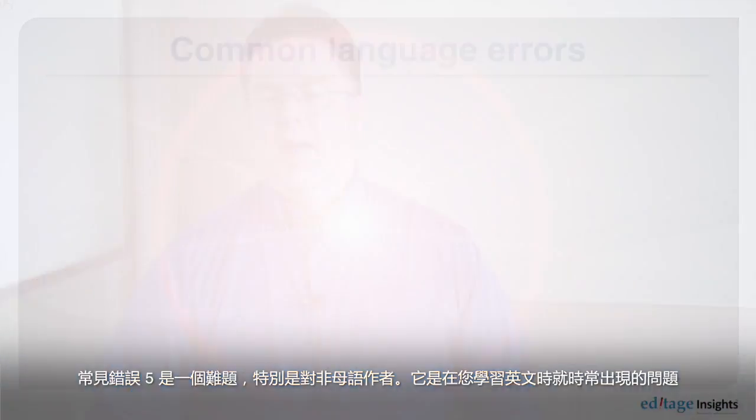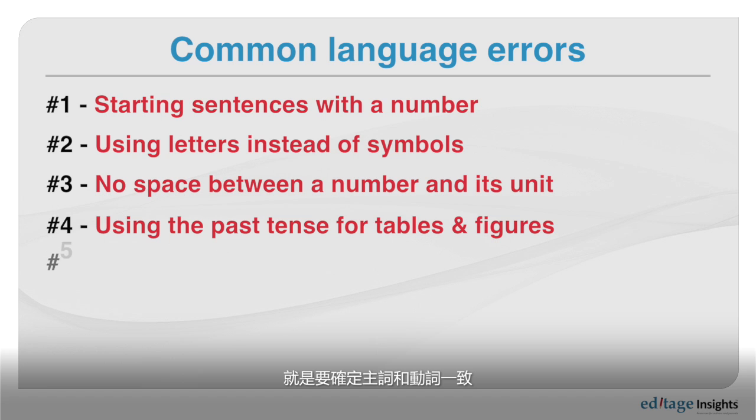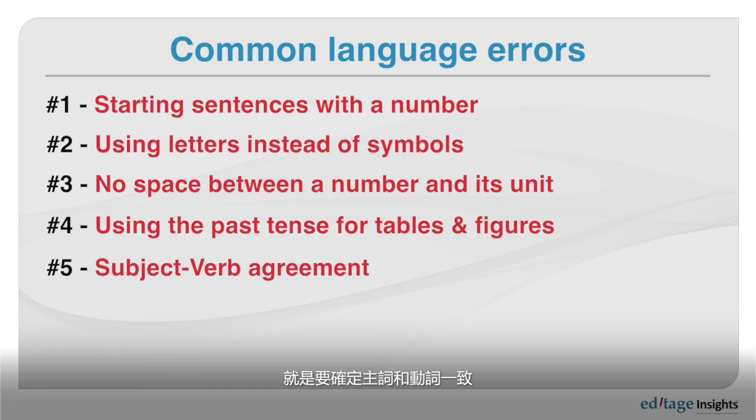Mistake number five is something that especially non-native writers have been facing since studying English: it's making sure that the subject and the verb agree.